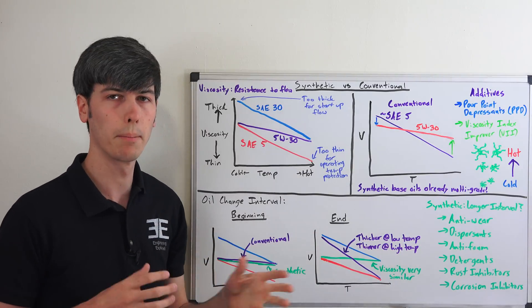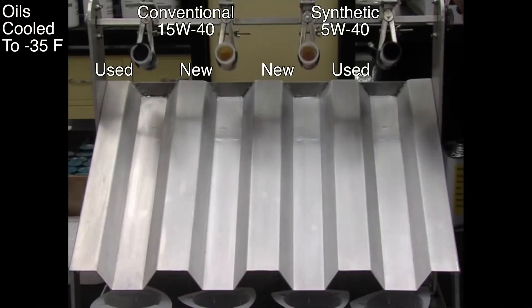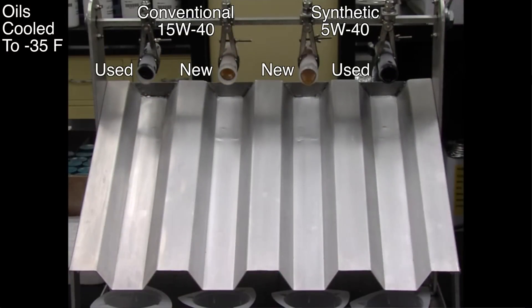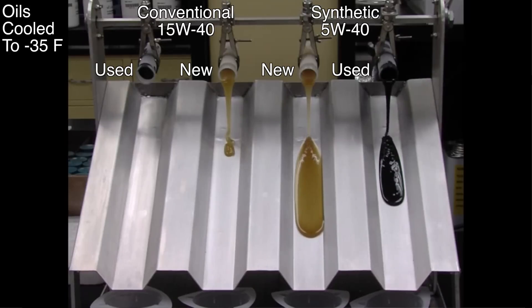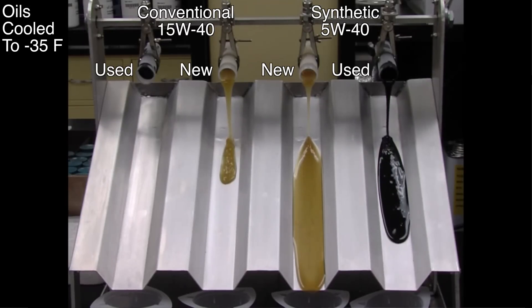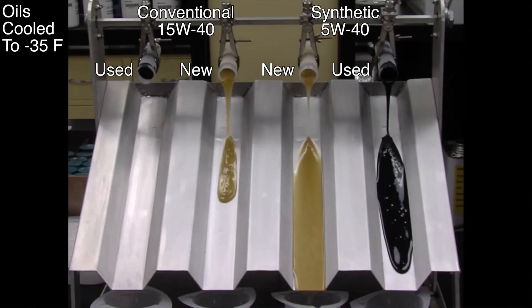Okay so now let's check out a demonstration so here we have four heavy duty engine oil samples all cooled to negative 35 degrees Fahrenheit on the left we have used and new conventional 15W40 and on the right we have new and used meaning one full oil drain interval of use synthetic 5W40 motor oil now at this point you may be thinking wait a minute this isn't a fair comparison because the synthetic has a lower cold viscosity rating so of course it will flow faster at low temps you're absolutely right.